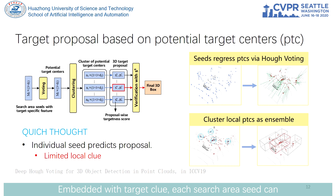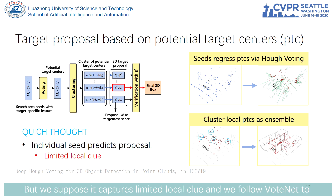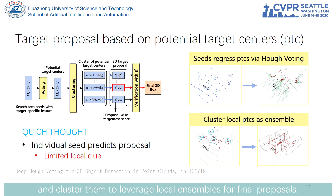Embedded with the target clue, each search area point can directly predict one target proposal. But since it captures only limited local clues, we follow VoteNet to regress the search area points into potential target centers, and cluster them to aggregate local ensembles for final proposals.